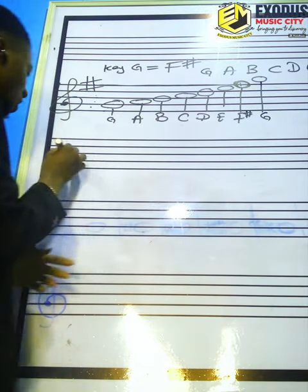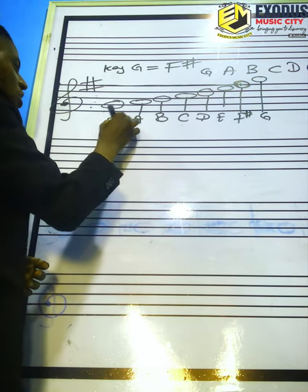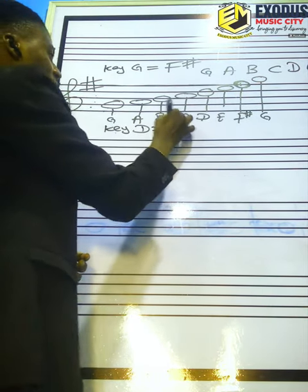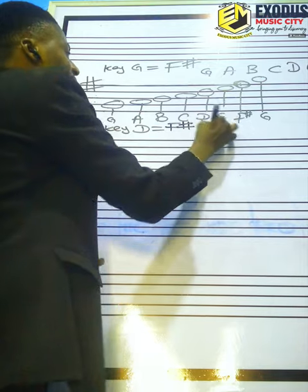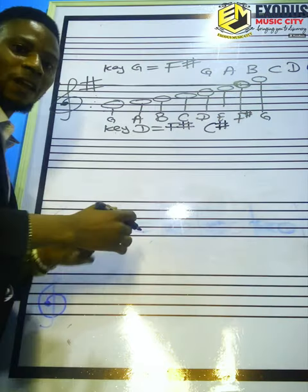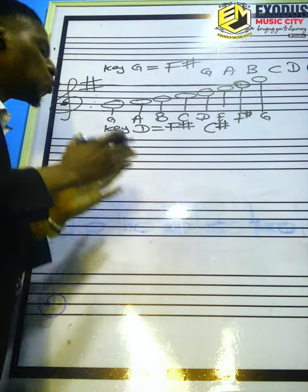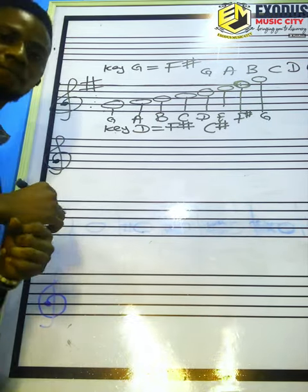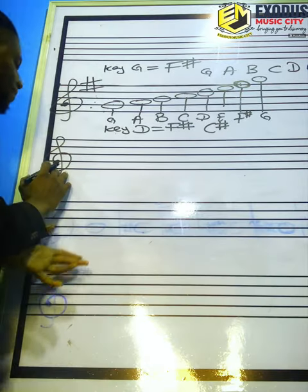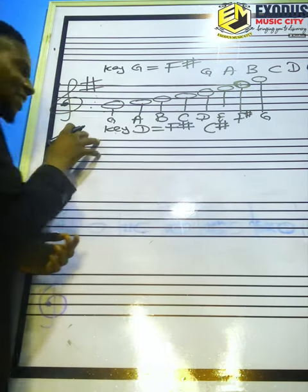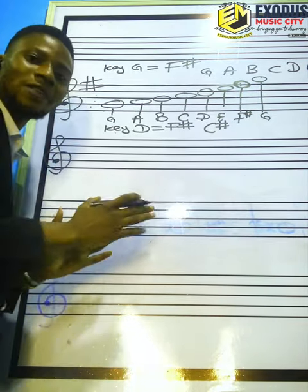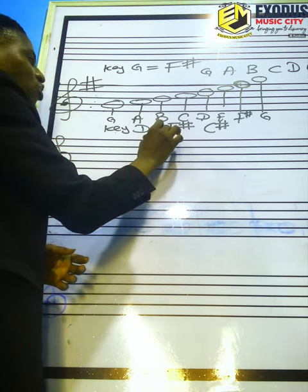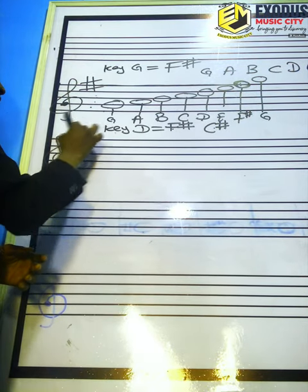Now let's quickly do another example. Let's construct the scale of D with key signature. Key D equals F sharp and C sharp. Now let's construct the scale of D with key signature.